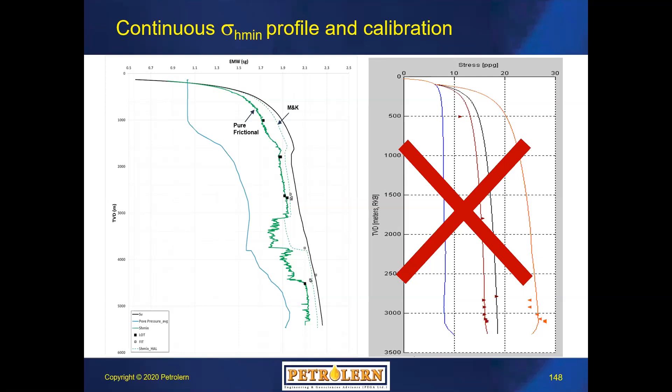Final question: why is logging data needed — can't we work directly with laboratory data? The answer is no. Calibration data are individual points — sometimes only one point or ten points along the whole well interval. We need a continuous profile of rock properties and stresses along the wellbore. This is why we base our model on logs and then calibrate them to lab data or measurements. Those tests are very expensive; you cannot do thousands of measurements along the well. That's all for today. Thank you, Dr. Hamid. The lecture will be uploaded to the YouTube channel, and don't forget to solve the quiz on Google Classroom. Best of luck and thank you.